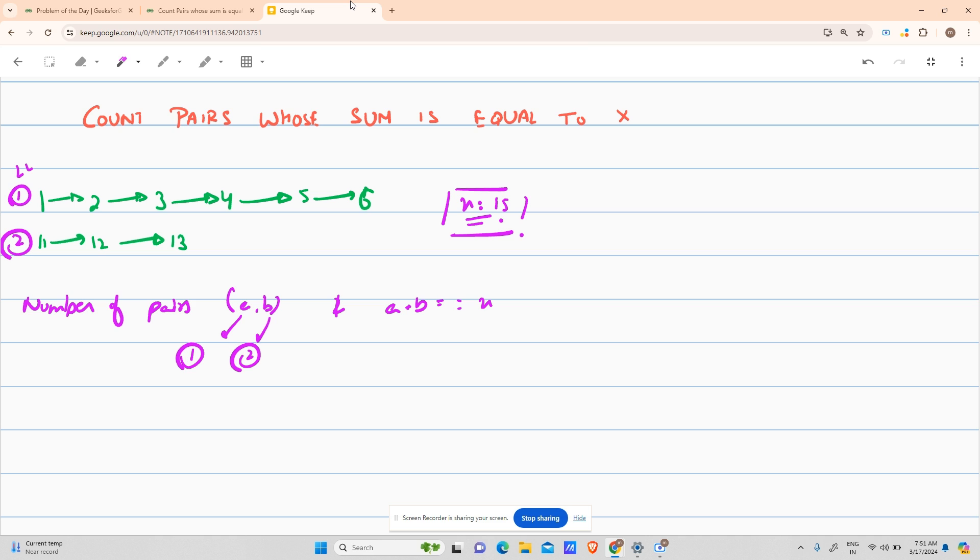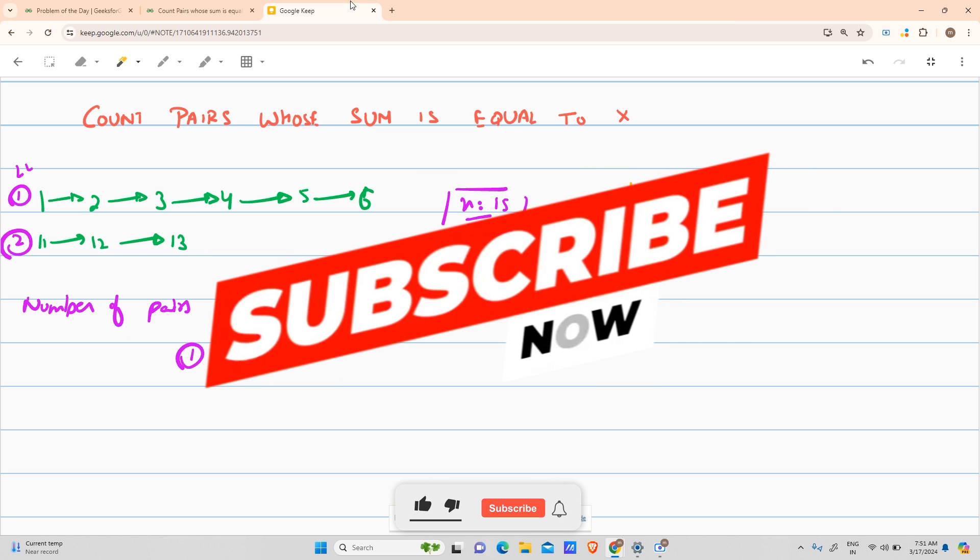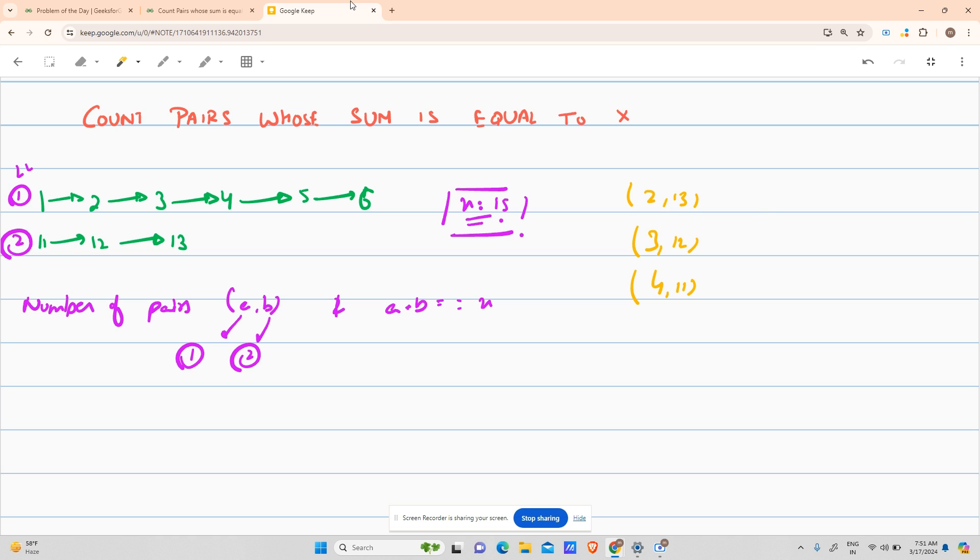So we find what are the pairs. You can see that 2 comma 13 is such a pair, after that 3 comma 12 is also such a pair, after that 4 comma 11 is also such a pair. So what is the number of pairs? It is three pairs, so your answer would be three. Very easy problem.